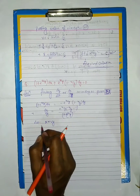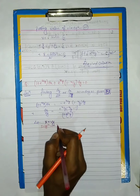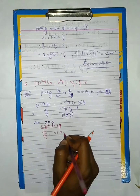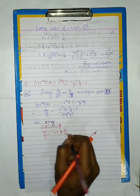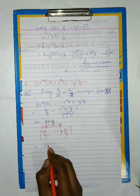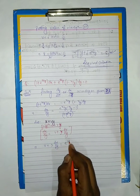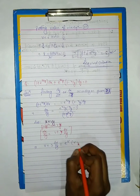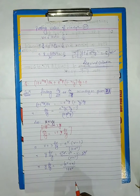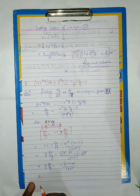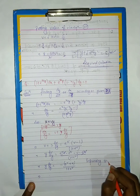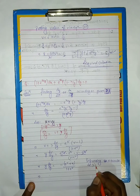Here, after trying the substitution y equals vx we did not find any solution. So instead we substitute x equals vy, differentiate with respect to y, and proceed as in the previous problem. After substituting x equals vy, we get a variable separable equation which can be solved easily.